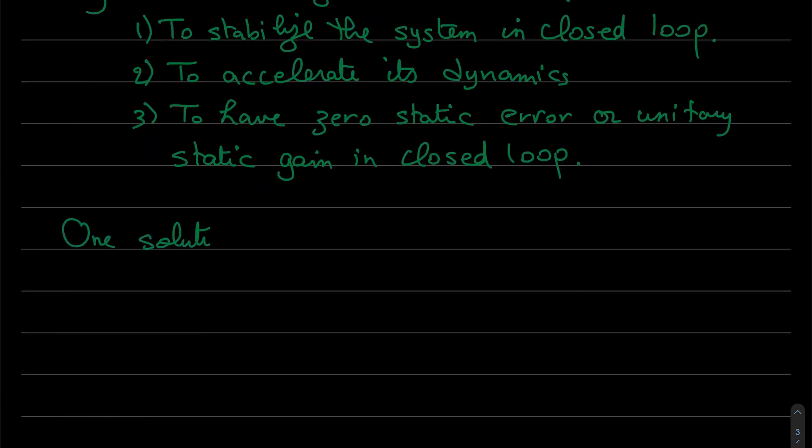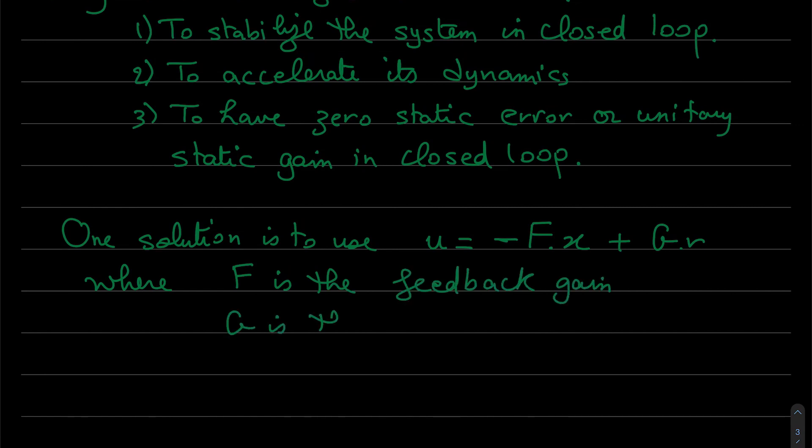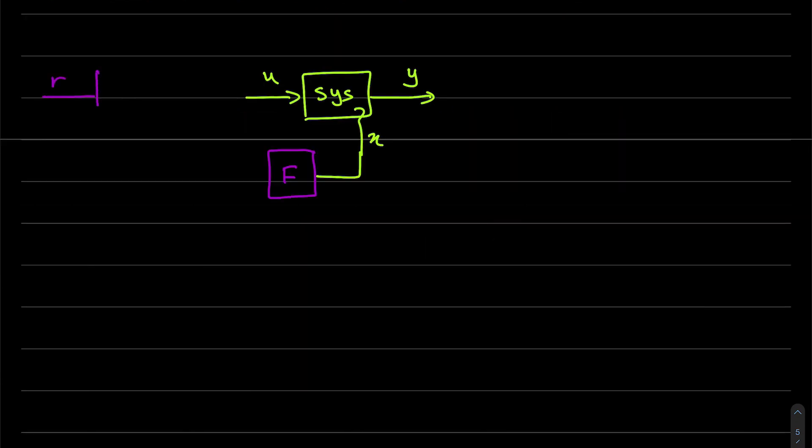One solution is to use u equal minus fx plus gr where f is the state feedback, g is the feedforward gain, and r is the reference. So we have a system, we will close the loop with f and g and this system will be closed loop system.